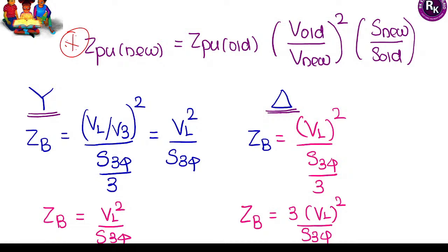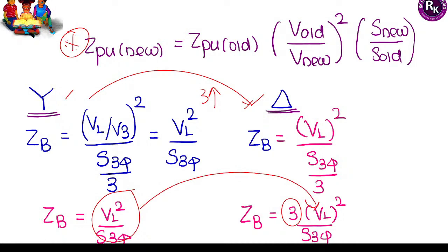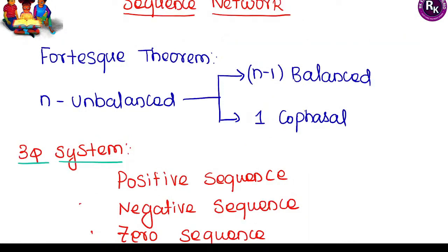For base impedance calculation in star or delta connections: the relation between star and delta always involves a factor of 3. Going from delta to star, impedance is reduced by 3 times; going from star to delta, impedance increases by 3 times. While targeting base impedance, delta connection is scaled by a factor of 3.